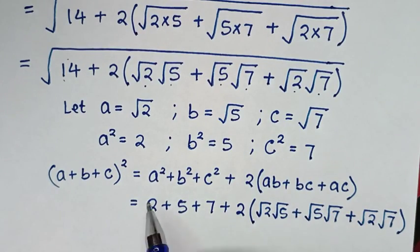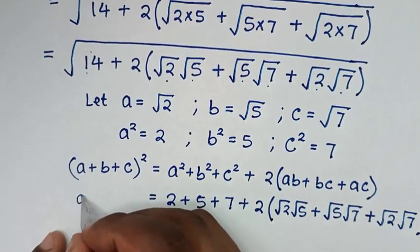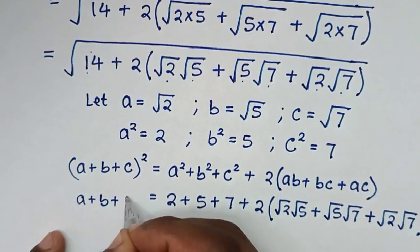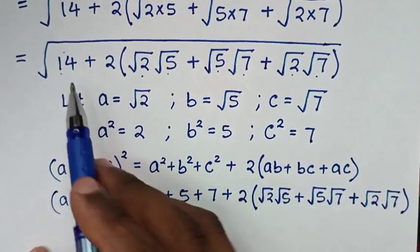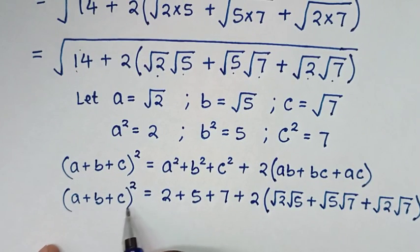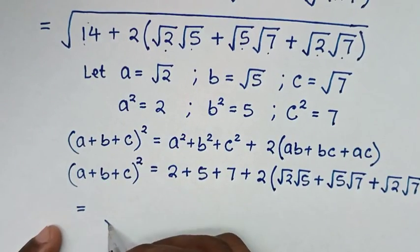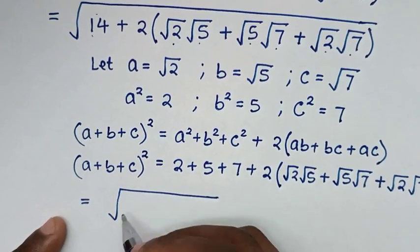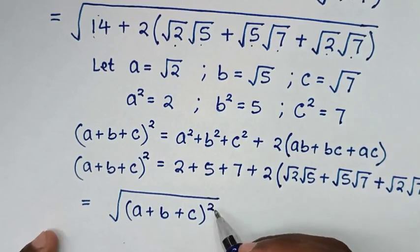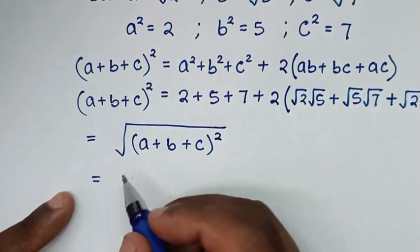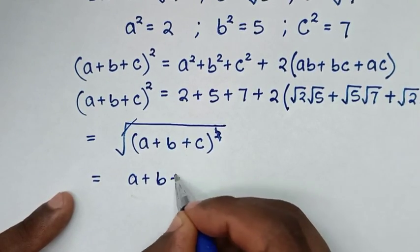Therefore this part, which equals this part, will be equal to (A plus B plus C) squared. Recalling that this equals this equals this, which is under a square root, it will be equal to square root of (A plus B plus C) squared. Then the square root cancels the square, so it will be A plus B plus C.